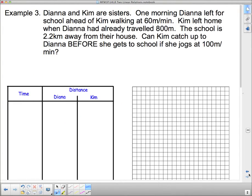So our next one here. Diana and Kim are sisters. One morning, Diana left for school ahead of Kim walking at 60 meters per minute. Kim left home when Diana had already traveled 800 meters. The school is 2.2 kilometers away from their house. Can Kim catch up to Diana before she gets to school if she jogs at 100 meters per minute? So I'd like you to try and graph this before you watch the rest of the video. Give this a try. This is at like 12 minutes and 10 seconds. And I want you to give this a try. And then come back.